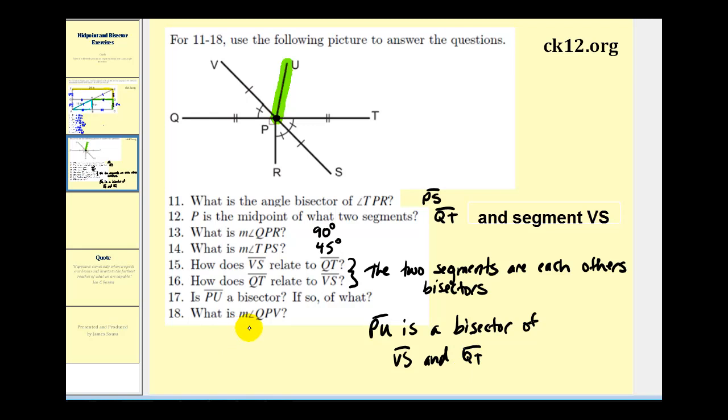And the last question, what is the measure of angle QPV? Here's angle QPV. Notice that angle QPV and angle TPS are vertical angles. And we said back on question 14 that angle TPS was 45 degrees. Therefore, angle QPT is also 45 degrees.